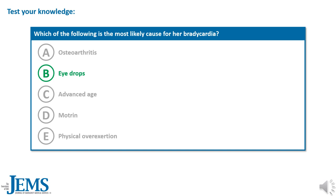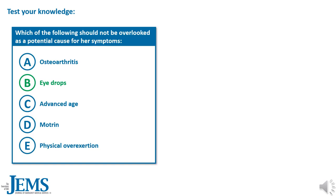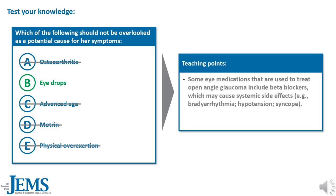The correct answer is B, her medicated eyedrops. Some eye medications used to treat open-angle glaucoma include beta blockers, which may cause systemic side effects including bradyarrhythmia, hypertension, and syncope. You should always suspect and consider medication side effects in a differential diagnosis.